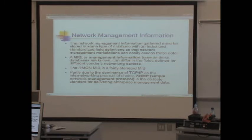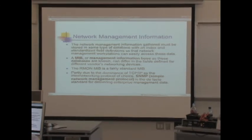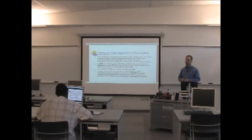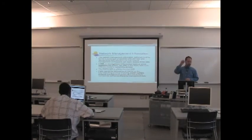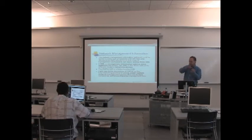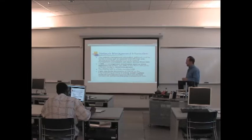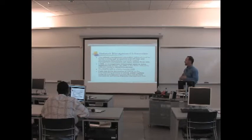The fields in a MIB can differ based on different vendors and networking devices. A DHCP server, which dynamically allocates IP address configuration, has its own DHCP MIB. A DNS server — the internet phone book storing name-to-IP-address mappings — has a DNS MIB. Each MIB differs because you analyze different types of information per service. The RMON MIB, or Remote Network Monitoring MIB, is standard in most environments and provides statistics like packets per second and IP datagrams per second.